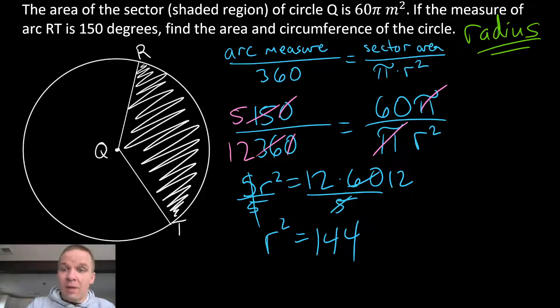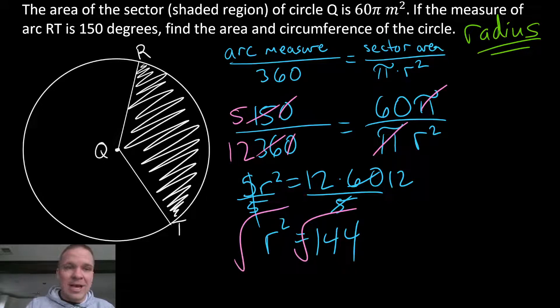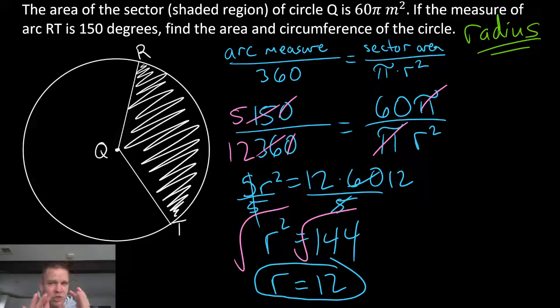Now if I want to solve for r, because that's my goal in green there, I want my radius. I'm gonna square root on both sides, and now I'm gonna get r equals 12. So there's my radius. That's our checkpoint.